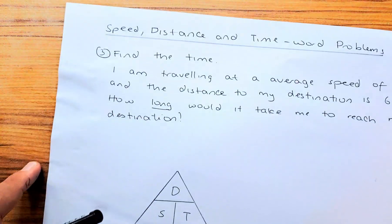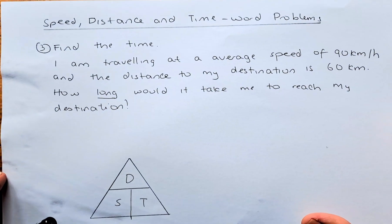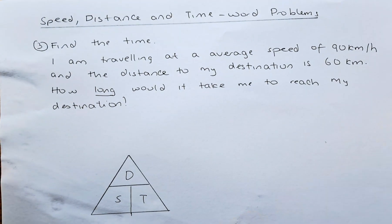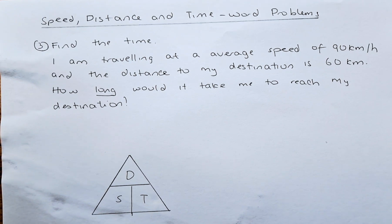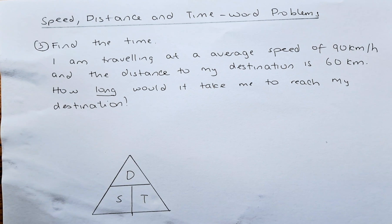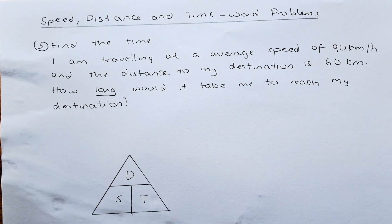Now we are doing the last one. This is the one that I normally use in my daily life. Find the time. I am traveling at an average speed of 90 km per hour and the distance to my destination is 60 km. How long would it take to reach my destination?